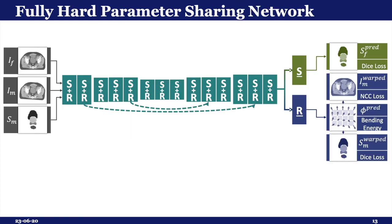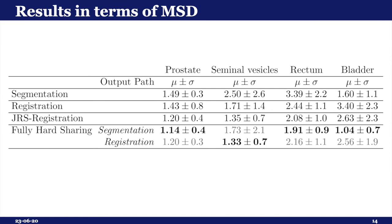This is why we designed a joint network that merges segmentation and registration architecturally. The architecture is similar to the previous network, except that there is an additional output layer for segmentation. The network is trained on both registration and segmentation outputs simultaneously. The results of this network are significantly better than the other networks, especially for the bladder, demonstrating that joining registration with segmentation helps the segmentation task overcome most of its weaknesses.